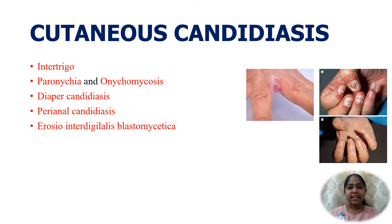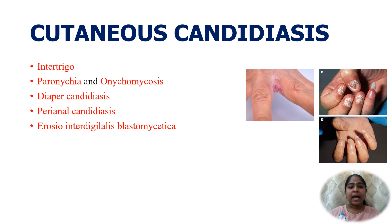Cutaneous candidiasis is exhibited as intertrigo, characterized by erythema and pustules in the skin folds associated with tight-fitting undergarments and sweating. Paronychia involves the nail-skin interface, and onychomycosis is the fungal infection of the nail. Diaper candidiasis presents as pustular rashes associated with use of diapers in infants. Perianal candidiasis and erosio interdigitalis blastomycetica — an infection affecting the web spaces of the hands and toes — are also seen.